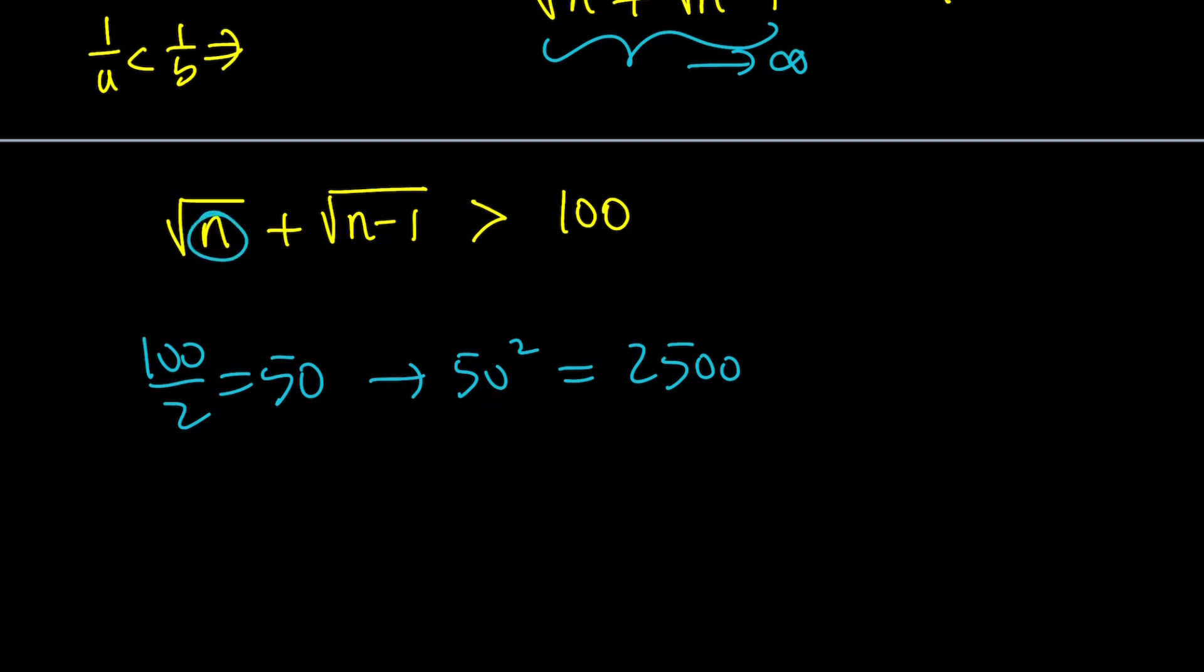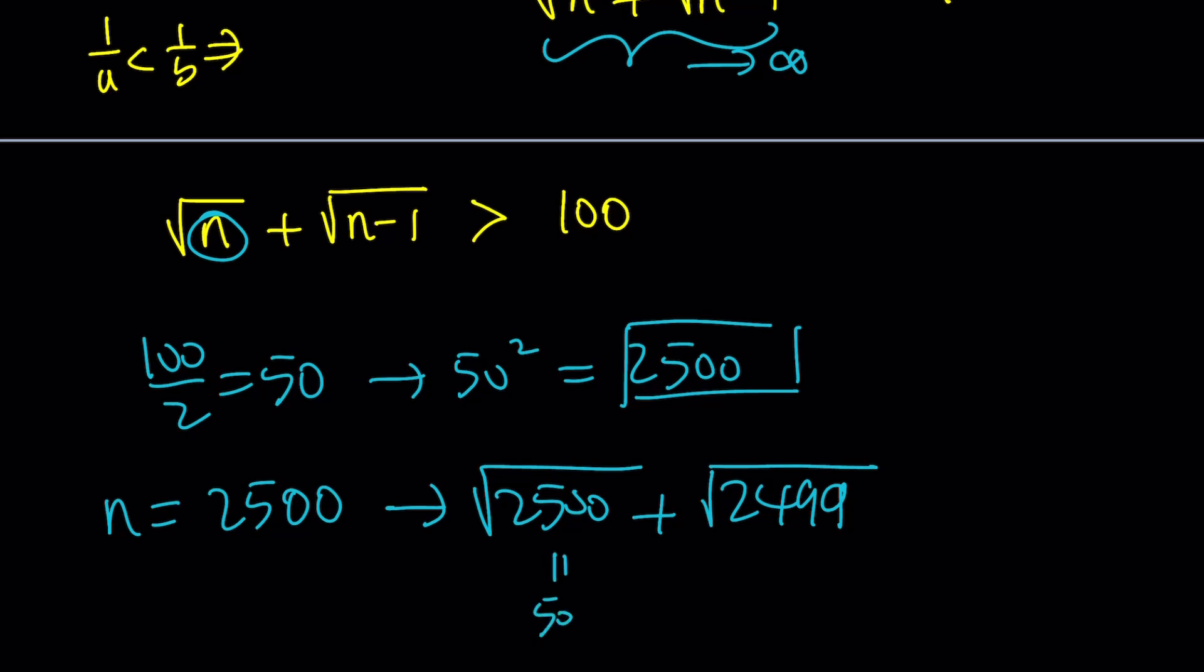Because I'm about to replace n with this number, so that its square root can be 50, and 50 plus 50 is like 100. Make sense? So let's go ahead and suppose n is equal to 2,500. In that case, we're going to get something like this. The square root of 2,500 plus the square root of 2,499. Great. Now notice that this is equal to 50, but this is less than 50. So their sum is going to be less than 100.